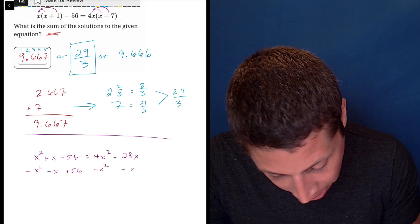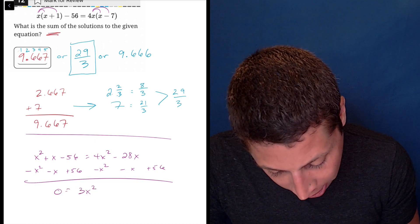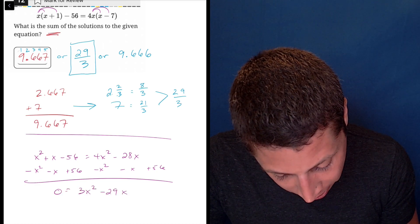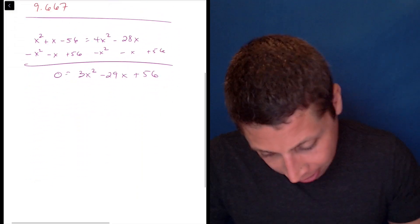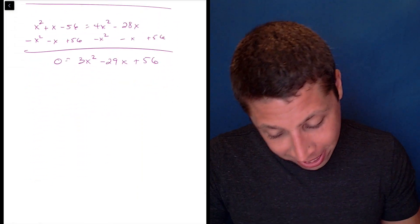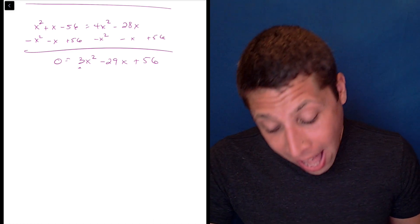Subtract x squared, subtract x, add 56. We're going to get zero is equal to 3x squared minus 29x plus 56. This is why I don't like doing this with the annoying quadratic. Now I have to slide and divide.